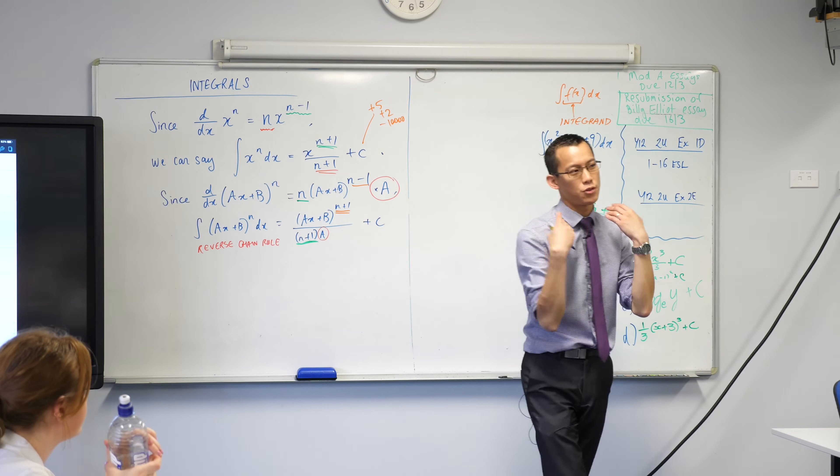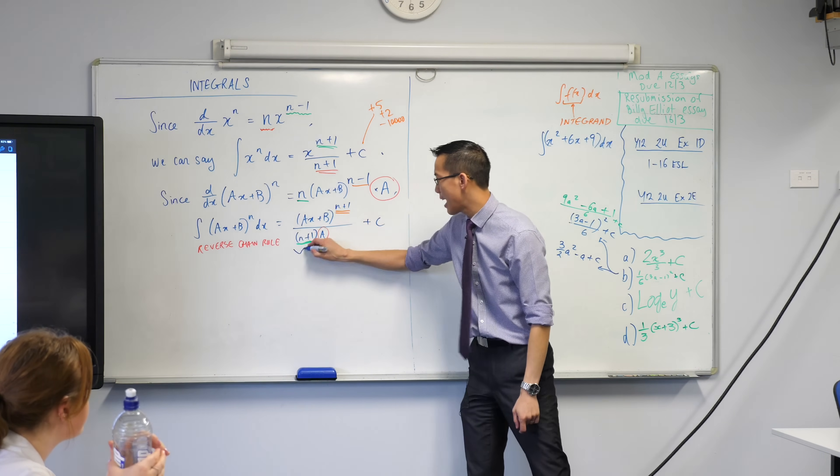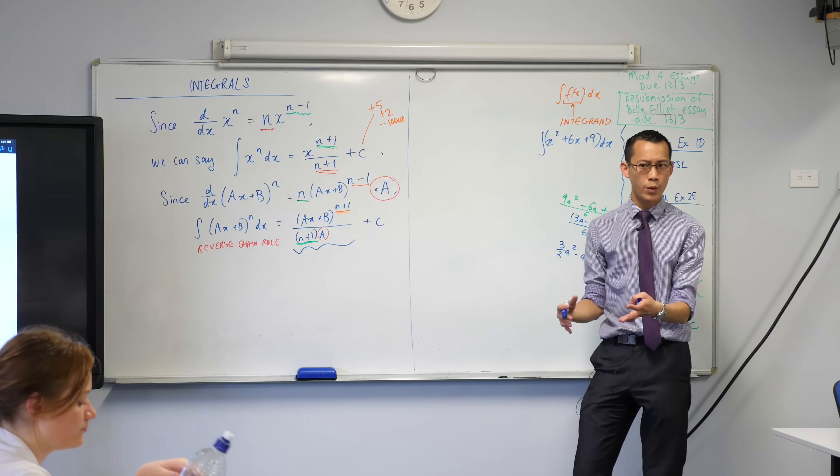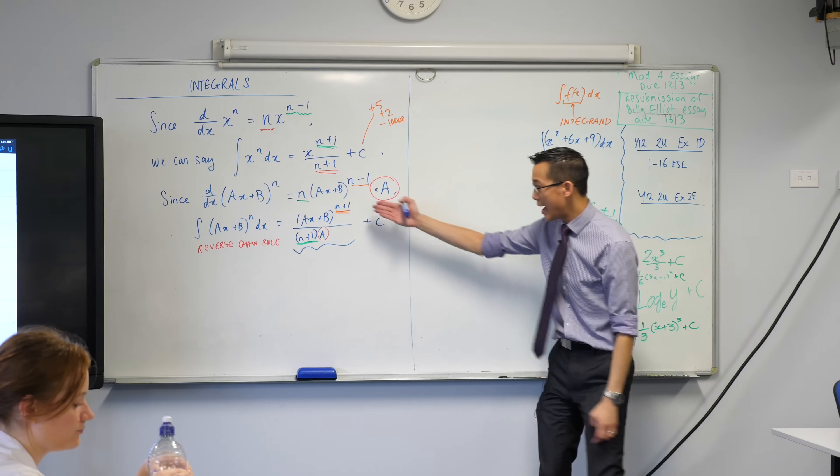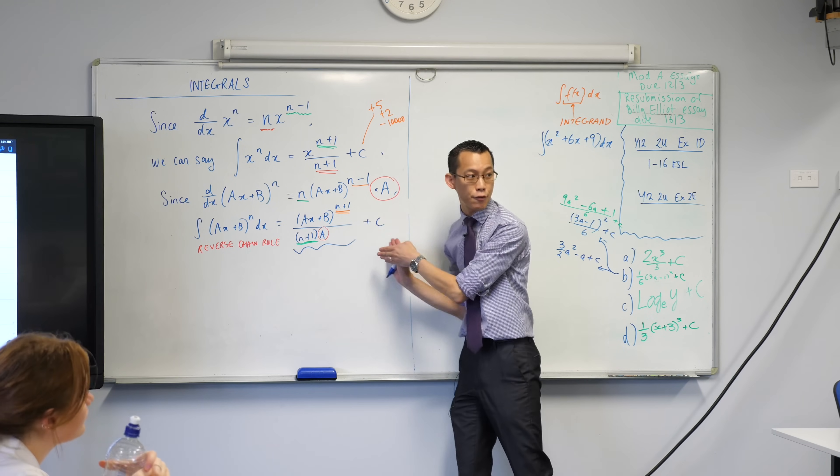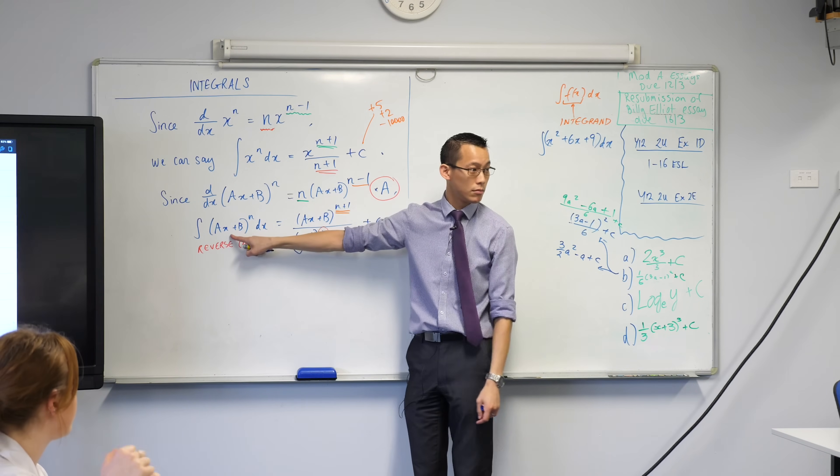Well, again, think about what I'm trying to achieve with integration. I'm trying to land at something. This result, what do we call it, by the way? Starts with a P. Primitive. Primitive, right? We're trying to end up with a primitive such that if you take this guy and differentiate it, you'll land here, okay?